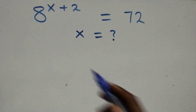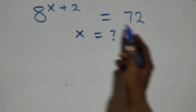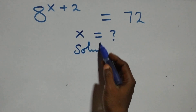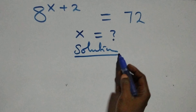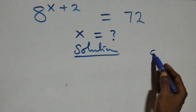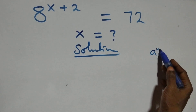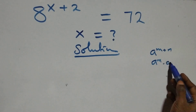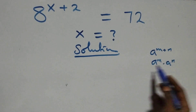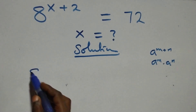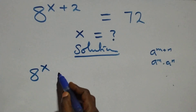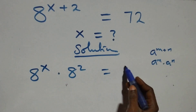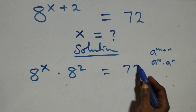Hello, you are welcome. We are going to solve this nice exponential equation. This follows when we have a raised to power n plus n — with the same base, a raised to power n — then a raised to power n. From here, all we have becomes a raised to power x, which means 8 squared equals 72.